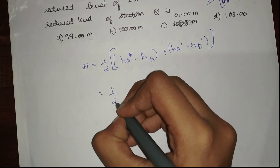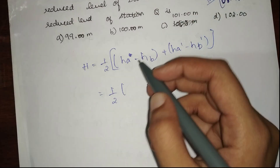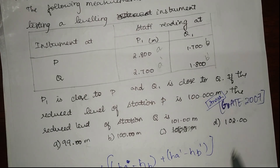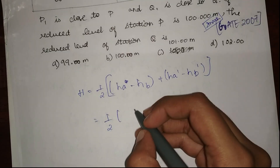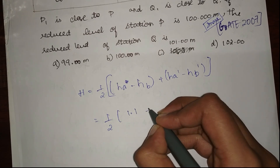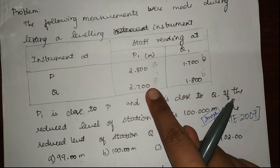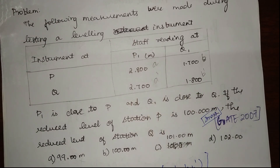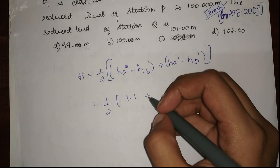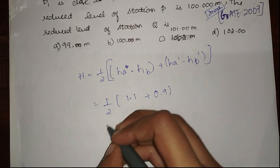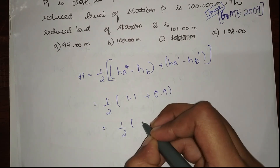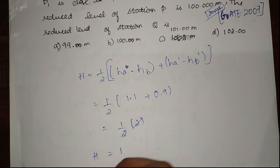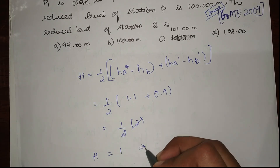Substituting into our formula: h = (1/2) × [(hA minus hB) + (hA' minus hB')]. This is (1/2) × [(2.8 minus 1.7) + (2.7 minus 1.8)], which is (1/2) × [1.1 + 0.9].